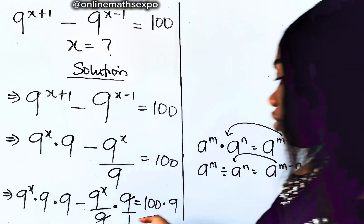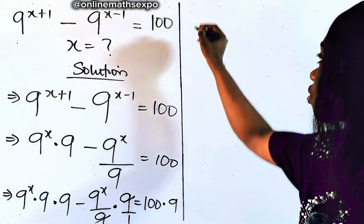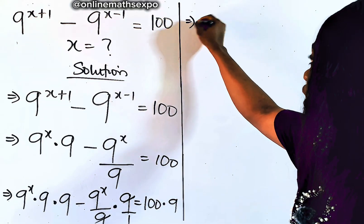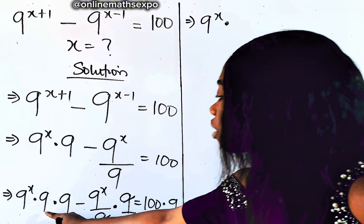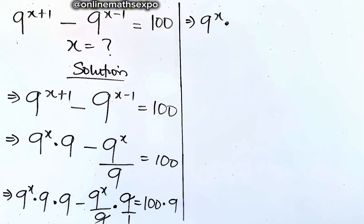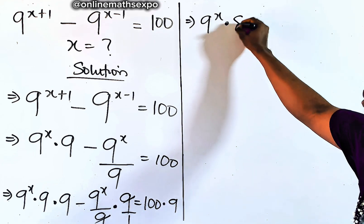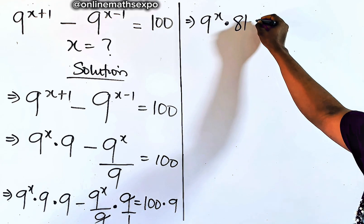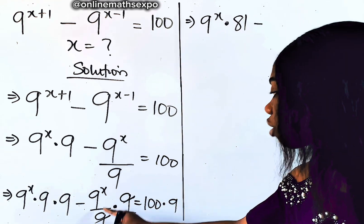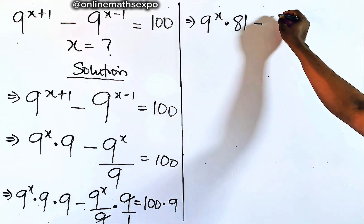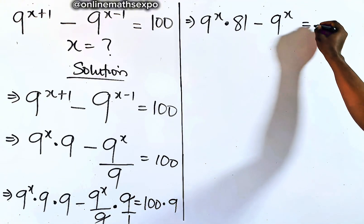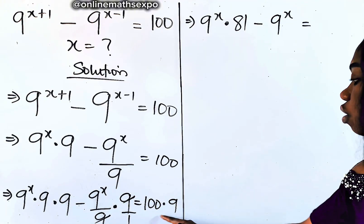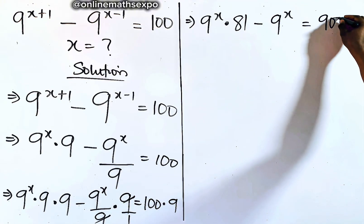Now let's keep solving. This gives us 9 to the power of x multiplied by 9 multiplied 2 times, which according to your exponent rules is the same as 81. So this minus — this will now be minus 9 to the power of x — is equal to 900.